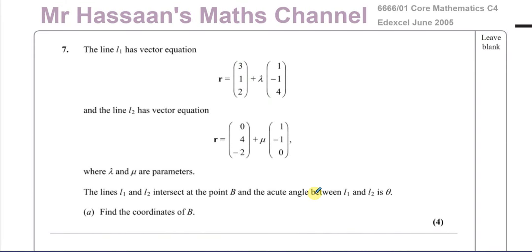Welcome back to Mr. Hassan's Maths channel. I'm going to go through a question from the June 2005 Core Mathematics C4 paper from Edexcel — the GCE paper, from before they had the International A-Level. This question is on vectors, relating to what we're studying in P4. The C4 papers cover basically the same material as P4, except for the proofs introduced in P4. Question number 7 — a student has requested the answer, and this question is about vectors.